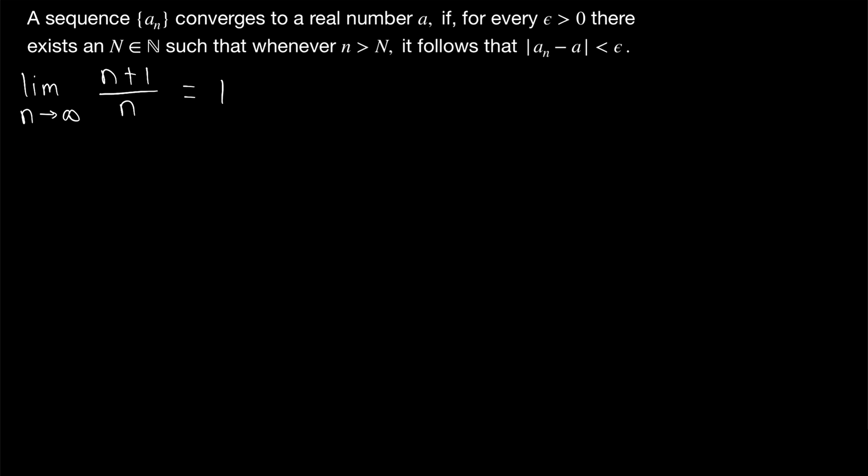Remember the point of a convergent sequence proof, by definition, is to prove that for every epsilon greater than 0, there is some natural number, big N, so that every term of the sequence after the big Nth term is within epsilon of the supposed limit. In this case, that supposed limit is 1. So, the scratch work we do before the proof is to identify the big N value that's going to work. As in, how far along in the sequence do we need to go to guarantee this inequality for a given value of epsilon?